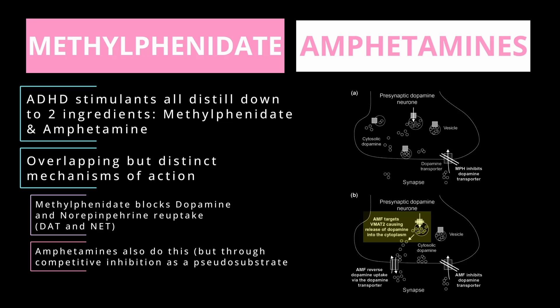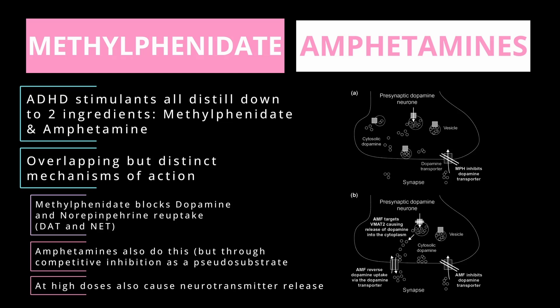VMAT2 is like a little tube that transports dopamine or norepinephrine into the vesicle. Amphetamine acts as a pseudosubstrate here, displacing the stored neurotransmitters. This leads to elevated levels of dopamine and norepinephrine in the cell, which then get released into the synapse. To simplify: methylphenidate blocks reuptake of norepinephrine and dopamine, while amphetamines also do this, but at high doses they also displace stored dopamine and norepinephrine, releasing even more neurotransmitter into the synapse. This additional mechanism may help explain why amphetamines have a higher abuse potential and lead to more euphoric effects.